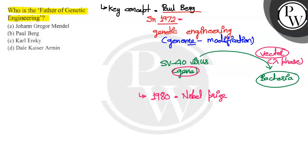So, in the question, we have asked the father of genetic engineering. What is the correct answer? That is B. Paul Berg is our correct answer. Hope you understood it well. Best of luck. Thank you.